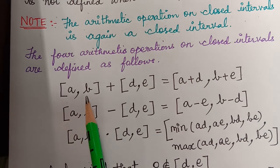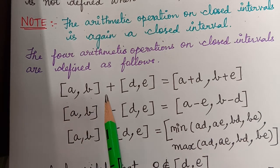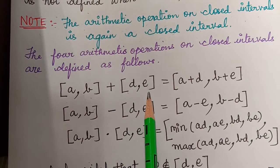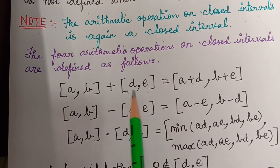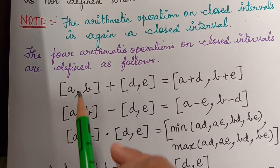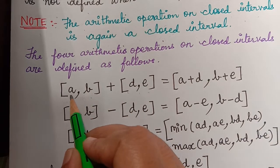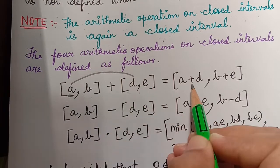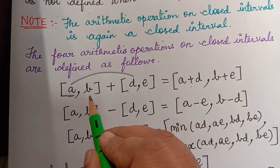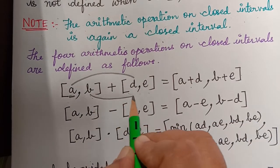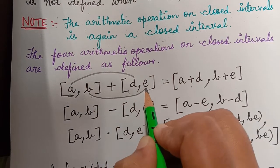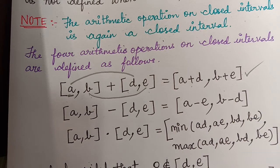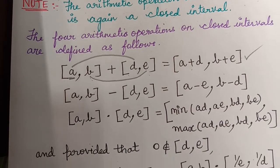Closed interval [a, b] plus closed interval [d, e] — in this case we add component-wise, that is, a is added to d and b is added to e. So the result is [a+d, b+e]. This is the addition operation.